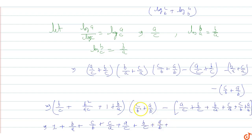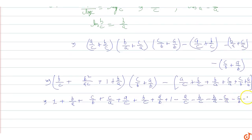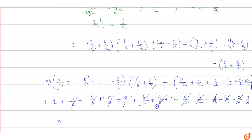This simplifies to 1 plus 1 minus a/c minus b/c minus b/a minus c/a minus c/b minus a/b. Then we cancel out: b/a cancels, c/b cancels, c/a cancels, a/c cancels, b/c cancels, a/b cancels. So what remains is 1 plus 1 equals 2.